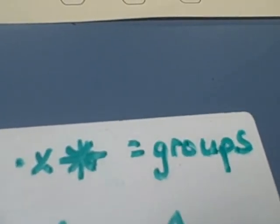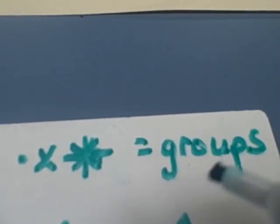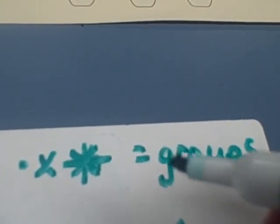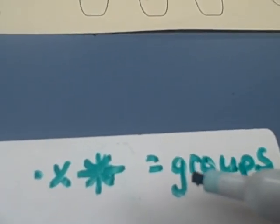Today we learned that multiplication really just means equal groups, counting equal groups. It's just another way of adding equal groups together. These are the three symbols for multiplication. You can use any one in any situation.